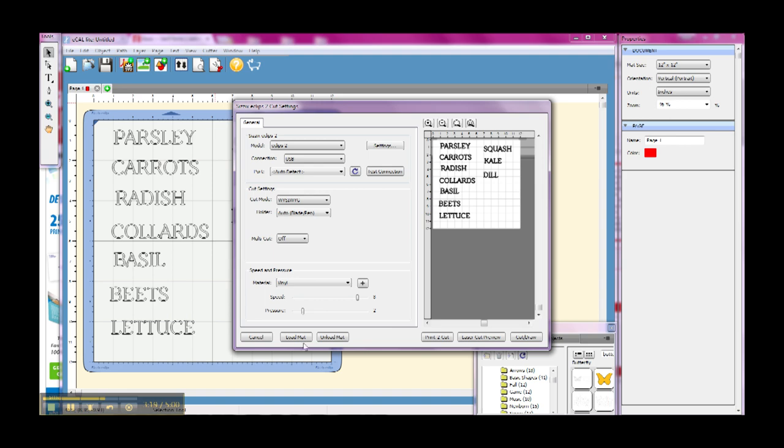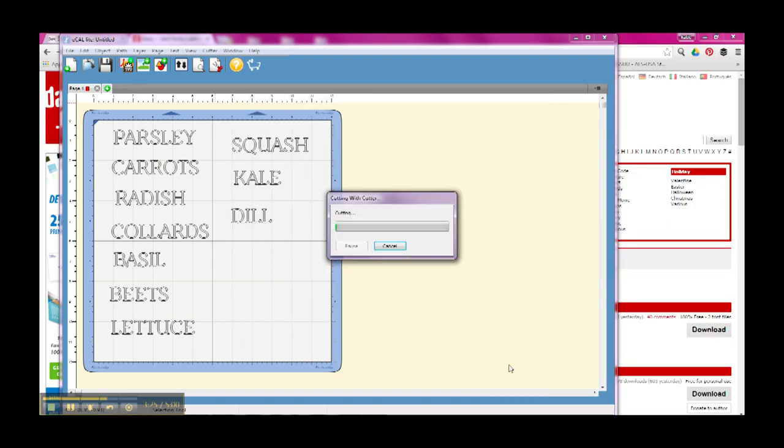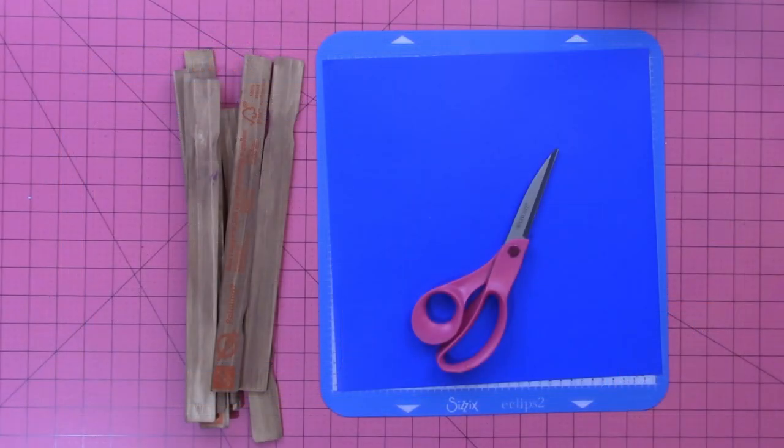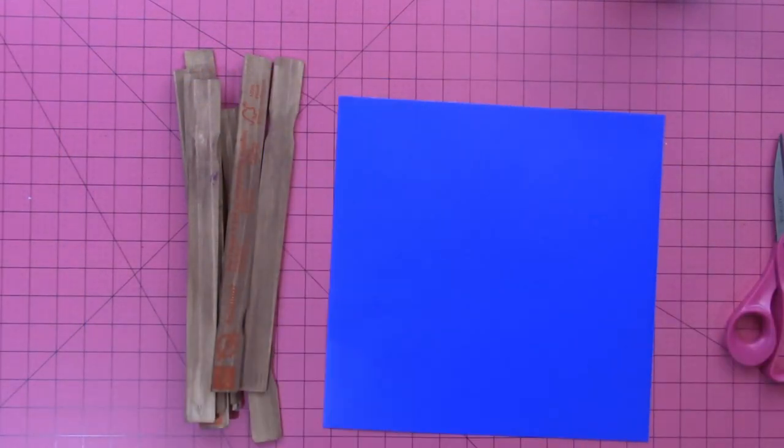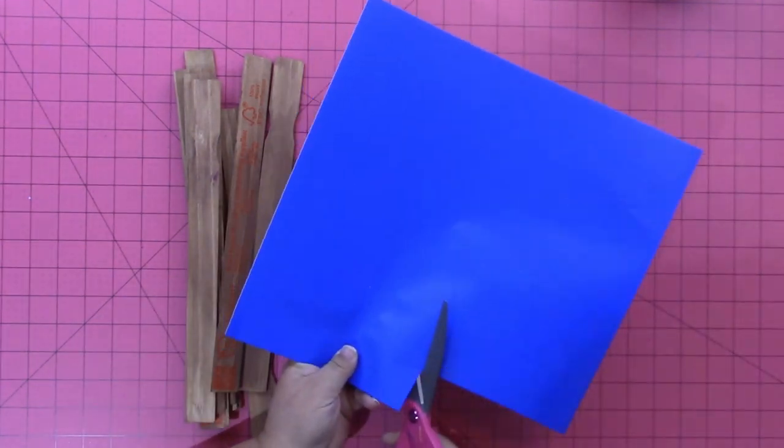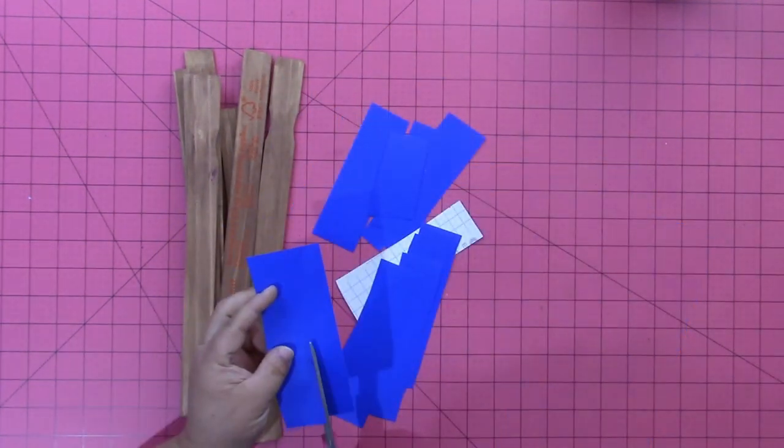Once I have those all typed out, I'm going to click the vinyl setting, load the mat, and go ahead and set that to cut. In my software I also made sure that these words were about an inch tall because the plant stakes are about an inch and a quarter thick. You're going to need to measure your own plant stakes to see how thick they are.